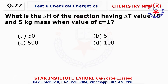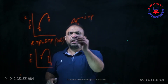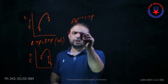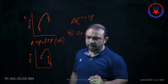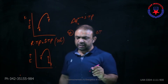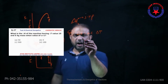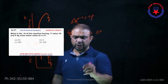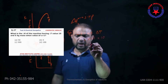Question number twenty-seven: A numerical type question — what is the delta H value? The formula is delta H = mc·delta T. The given values are: mass = 5 kg, specific heat capacity of water c = 1, and delta T = 10. So delta H = 5 × 1 × 10 = 50 joules. 50 J is your answer.